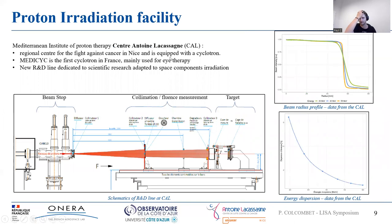Here is the facility that we will use. It is based in Nice, in France, at the Antoine Lacassagne Centre. It is a centre that has a cyclotron called MEDICYC, mainly used for medical purposes, but they did a lot of work to develop a new line dedicated to scientific research and adapted to space components irradiation. Here you have a schematic of the line and on the right you have more information about the beam itself.